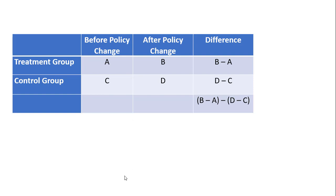To think about difference-in-differences estimation, let's put together a table where we have a treatment group — the group of people, firms, cities, or states that will be affected by the law change — and a control group that will be unaffected. We have columns for before the policy change, after the policy change, the difference, and the difference-in-differences estimation in the bottom cell.